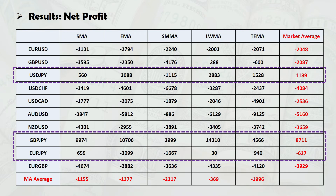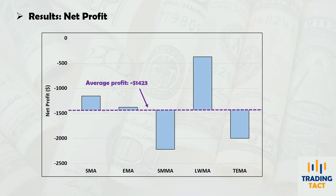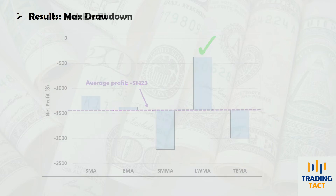Unsurprisingly, the Japanese yen pairs perform best. If you want to select markets for mean-reversion trading instead, you can flip the strategy logic to sell when price closes above the moving average. Using the average profit across all back-tests as a baseline, the linear weighted moving average is the clear winner in net profit.